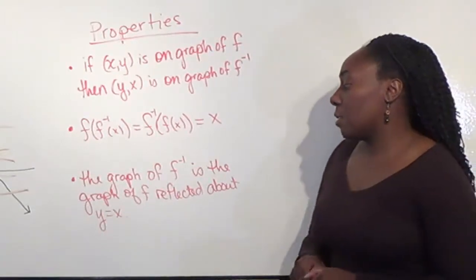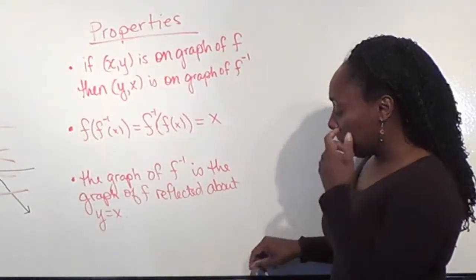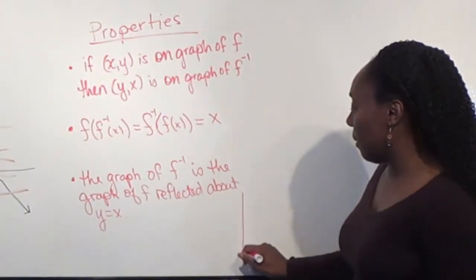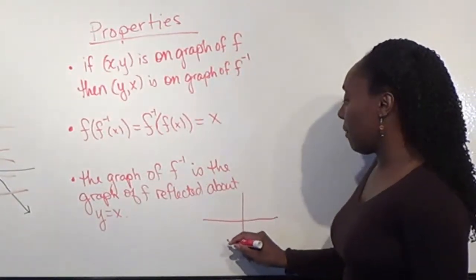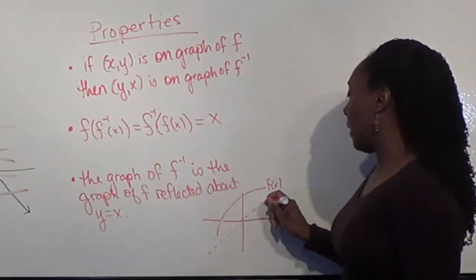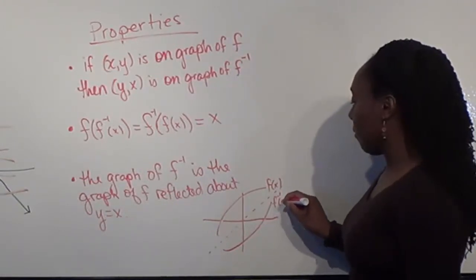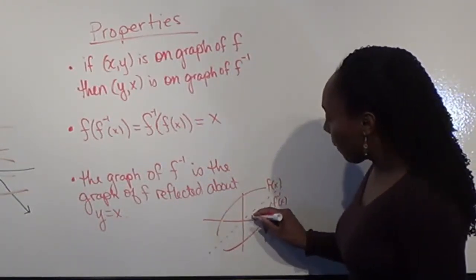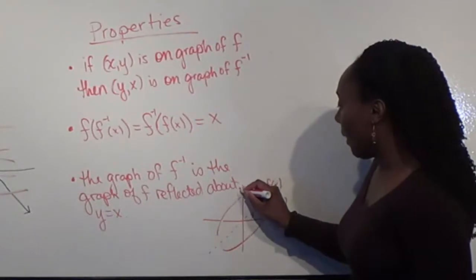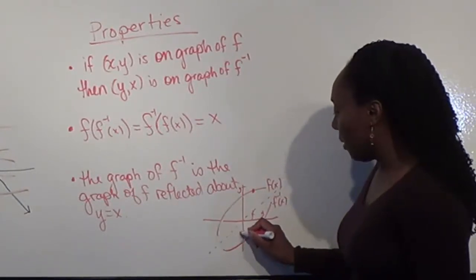The graph of f inverse is the graph of f reflected about the line y equals x. If I'm looking at a function and I look at the line segment y equals x, and I reflected about that, then I'm going to get the inverse function. More importantly, if I look at this point here, which would be x comma y, then the corresponding point on the inverse is going to be y comma x.